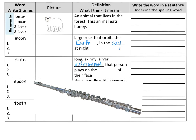A flute is a long, skinny, silver instrument that a person plays on the side of their face. We can write a sentence about the flute, such as: 'The man played a beautiful song on the flute,' or 'There was a flute in the band.'